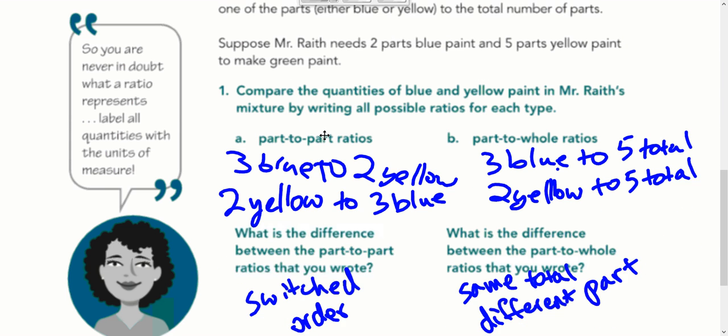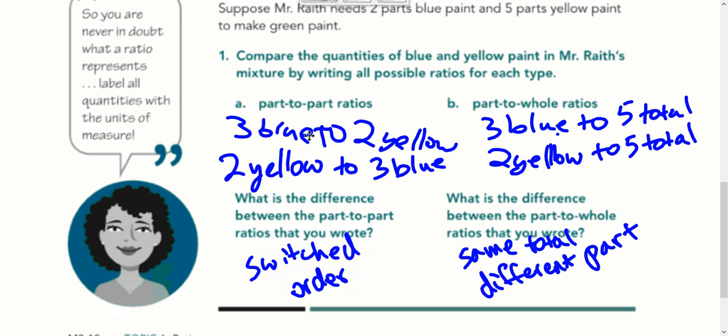We have part-to-part ratios: three blue to two yellow, or two yellow to three blue. Here we have three blue to five total, and two yellow to five total. See the difference between the part-to-part and the part-to-whole? Part-to-part is just one part compared to another part. Here, it's one part to the total and the other part to the total.